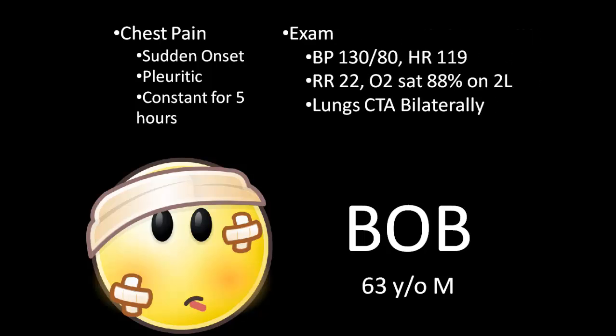When you look Bob over, his blood pressure is 130 over 80 and heart rate is almost 120. He's breathing 22 times a minute, and his oxygen sat is 88% on two liters nasal cannula. He doesn't have any crackles, rales, or rhonchi in his lungs.